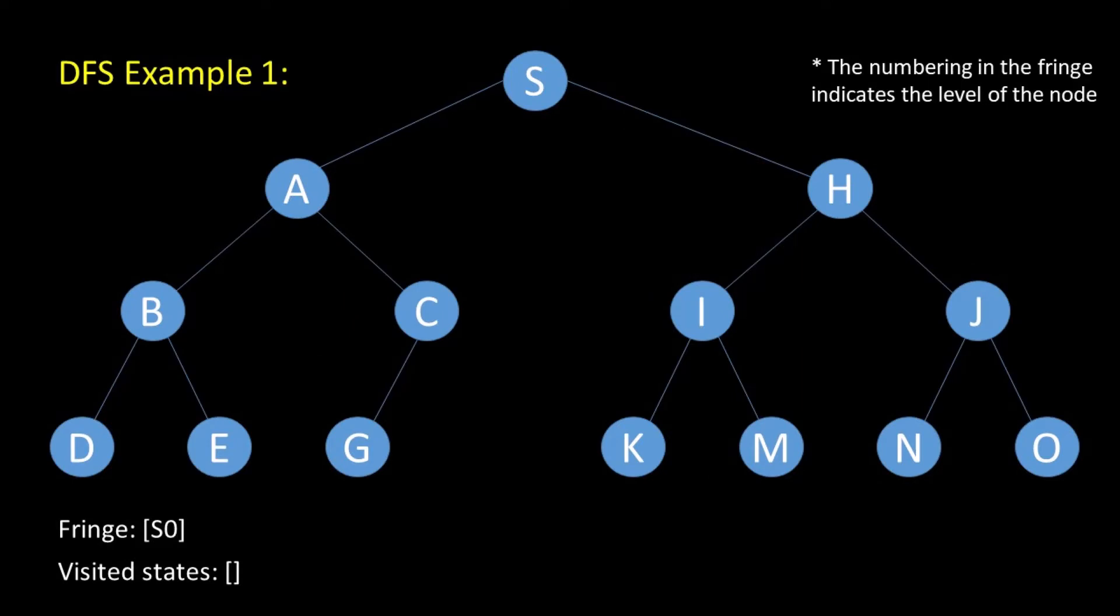Let us now look at the following graph. S is the root node or the starting node. S is at level zero. We visit S. Is S the goal node? No. We expand S. This gives A and H. To choose the next node to expand, we choose the one which has a higher alphabetical priority. So we choose A.